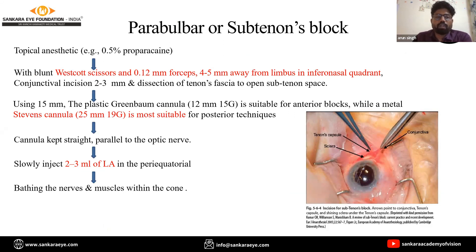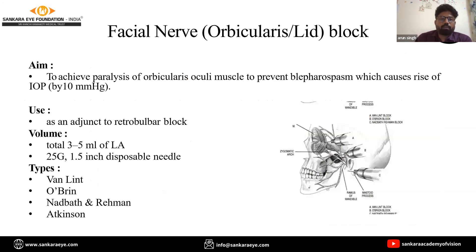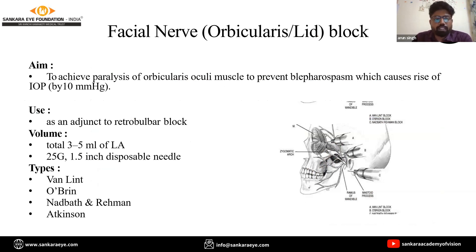Using a metal Stevens cannula, we inject the local anesthetic agent, approximately two to three ml, at the equatorial plane. Other adjunctive techniques include facial nerve blocks, which were used alongside retrobulbar blocks in earlier times. Different techniques described include O'Brien, Van Lint, Nadbet, Ramen, and Atkinson techniques.